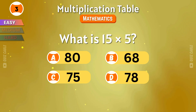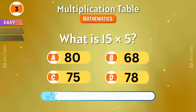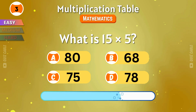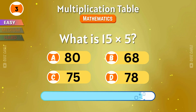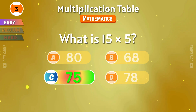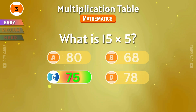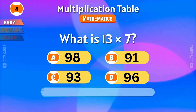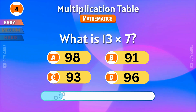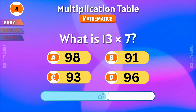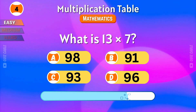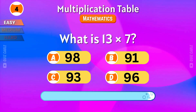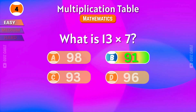What is 15 times 5? The correct answer is 75! What is 13 times 7? That's 91!